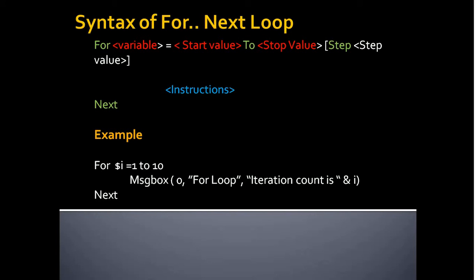This keeps displaying until the iteration count reaches 10. Once it reaches 10, then it terminates the program. This is how a For Next loop works. Thank you.